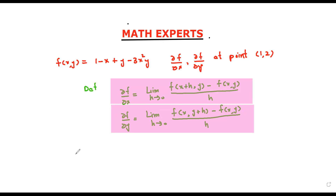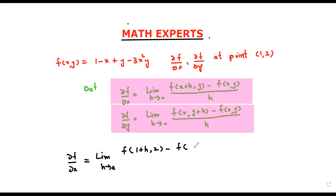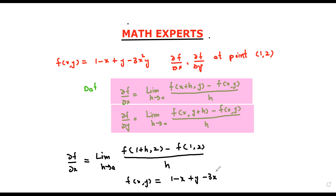Now we will move to our question. For ∂f/∂x at the specified point (1, 2), we apply: limit as h approaches 0 of [f(1+h, 2) − f(1, 2)] divided by h. Our function is f(x, y) = 1 − x + y − 3x²y, so we need to find f(1+h, 2) and f(1, 2).